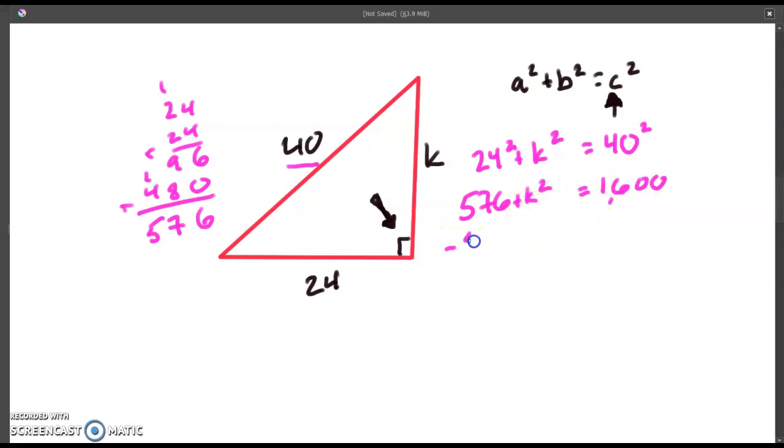The first thing to do is to get rid of this 576. We're going to subtract it. Subtract 576. We're going to end up with k squared equals 1,600 minus 576, which will leave us with 1,024. So k squared is going to be equal to 1,024.